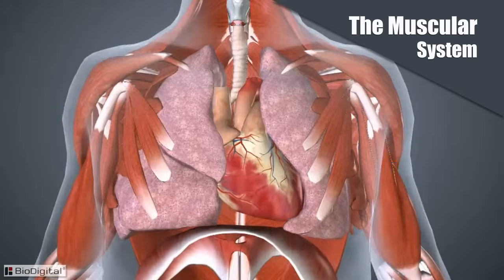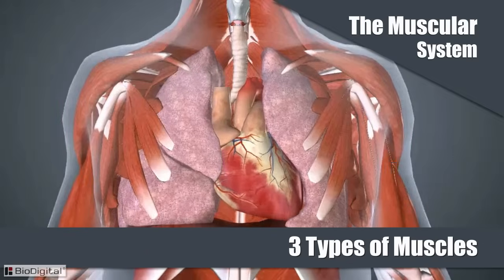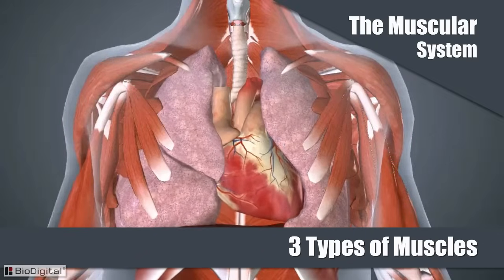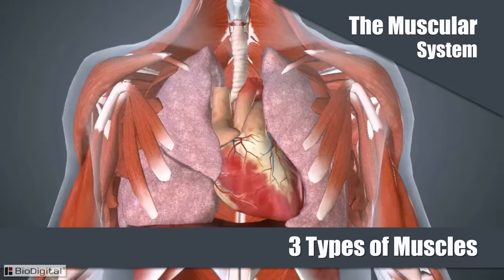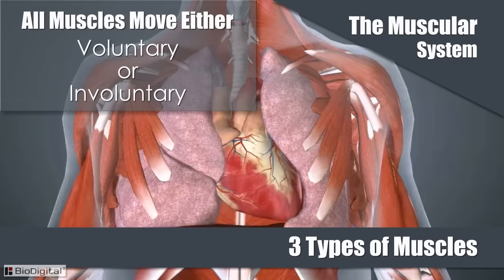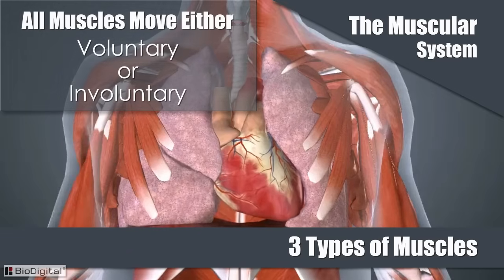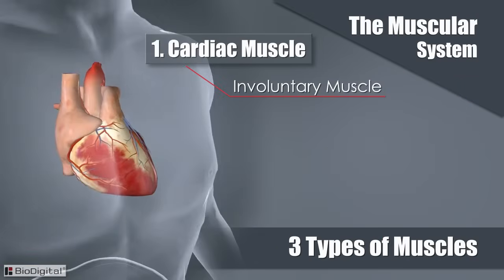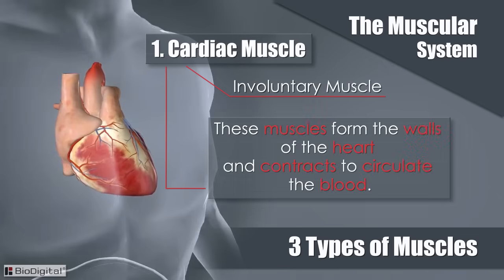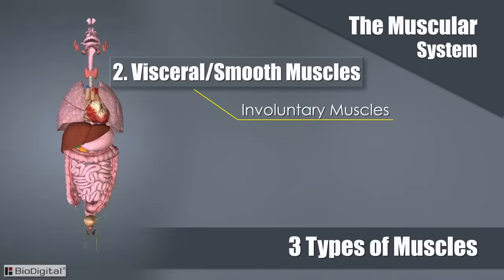The muscular system is divided into three main types of muscles, and each type can be moved in one of two ways: either voluntary or involuntary. The cardiac muscle is an involuntary muscle, meaning it operates without any conscious control. These muscles form the walls of the heart and contract to circulate the blood.